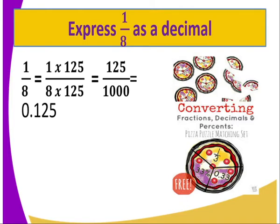So basically, what you should do when you are given a fraction: you identify a common factor, then you multiply both the numerator and the denominator with the common factor.